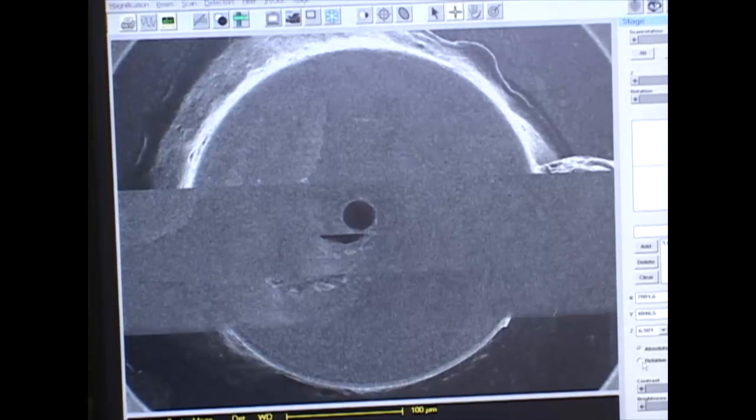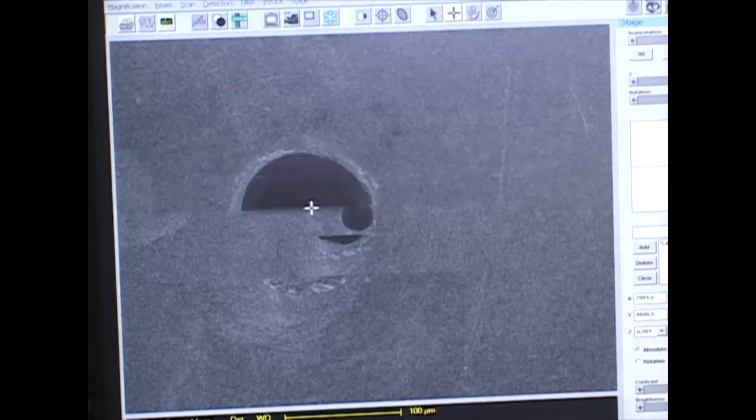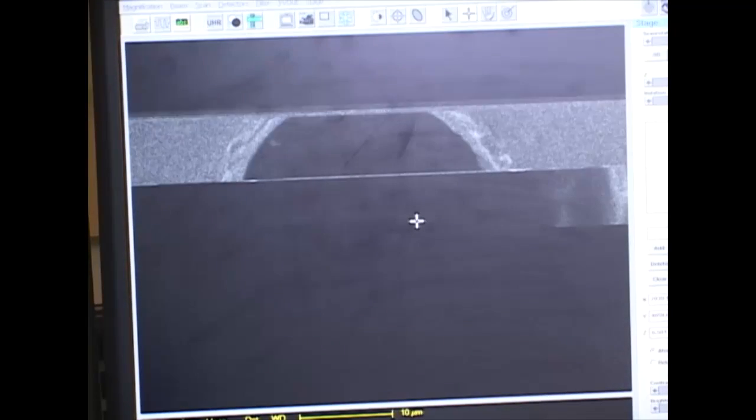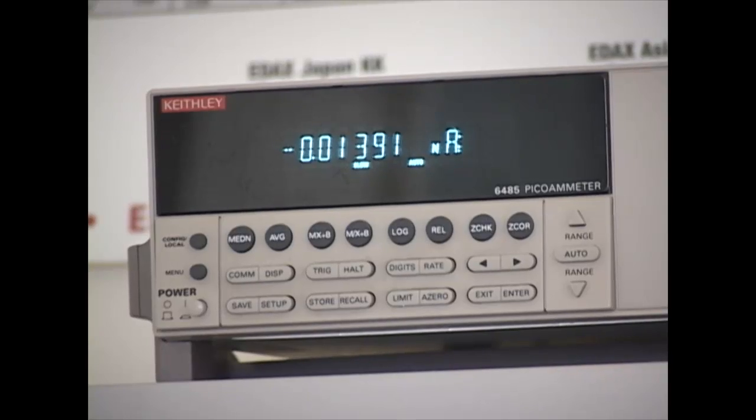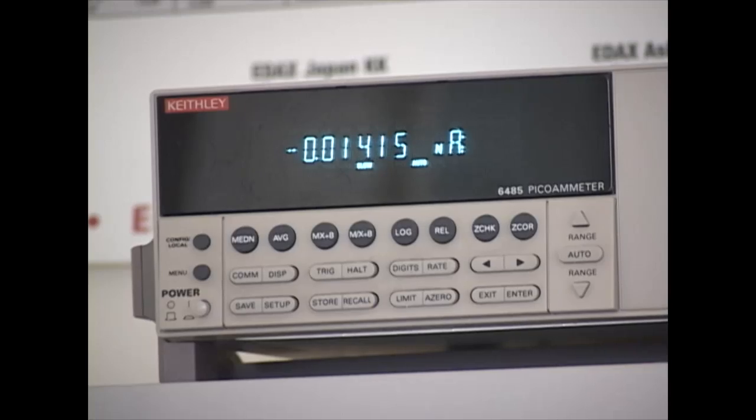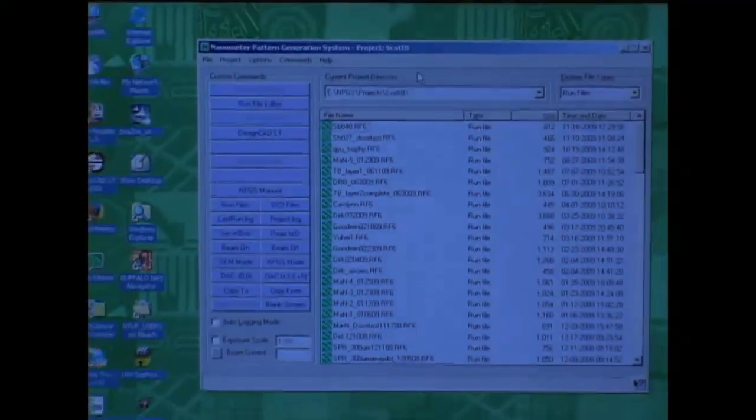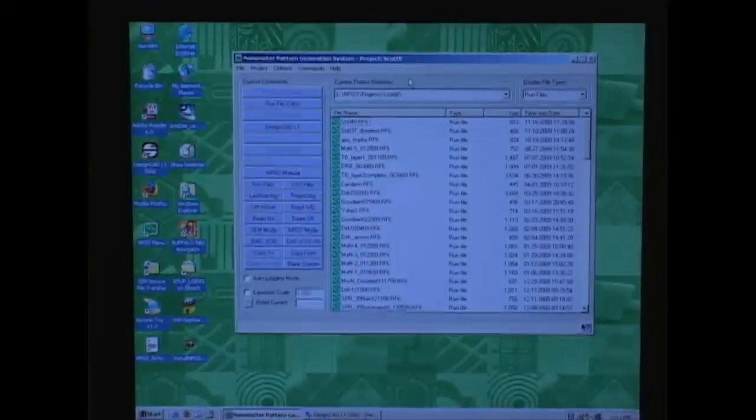This is the Faraday cup and to measure the beam current, I'm just going to zoom into the hole and read the current off of the ammeter. So it's reading nanoamps, it's actually about 13.9 picoamps and I'll enter that into the run file so that it calculates the dose time.